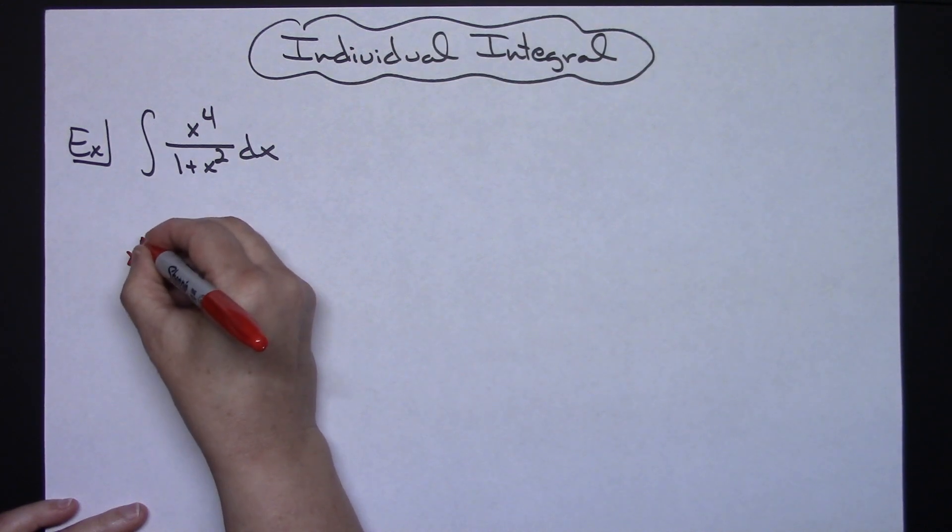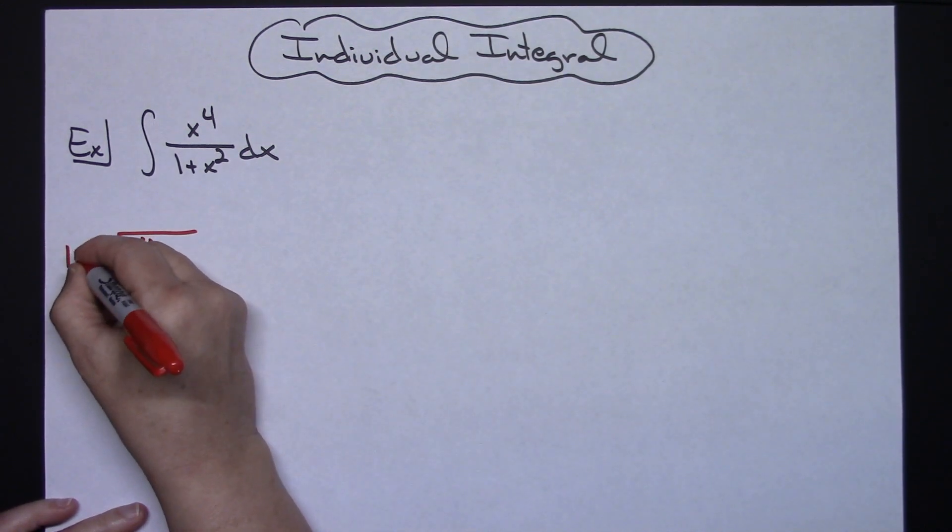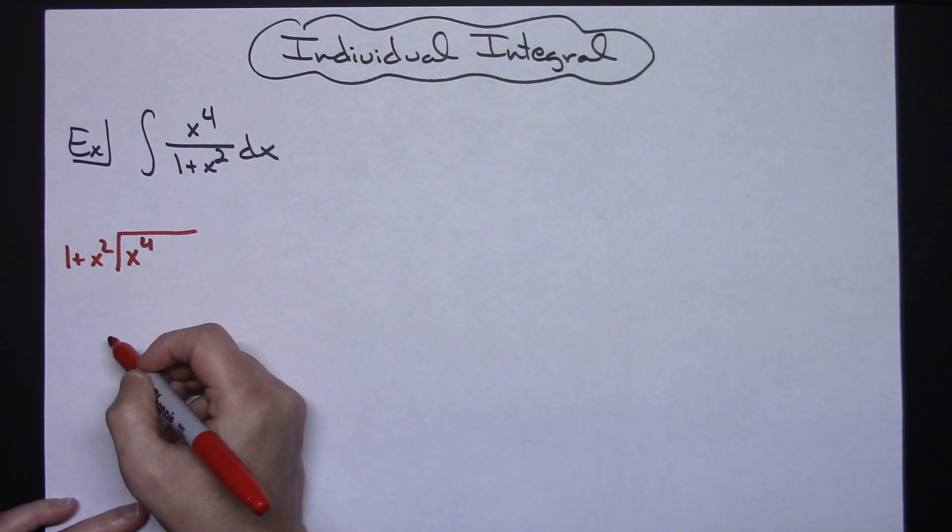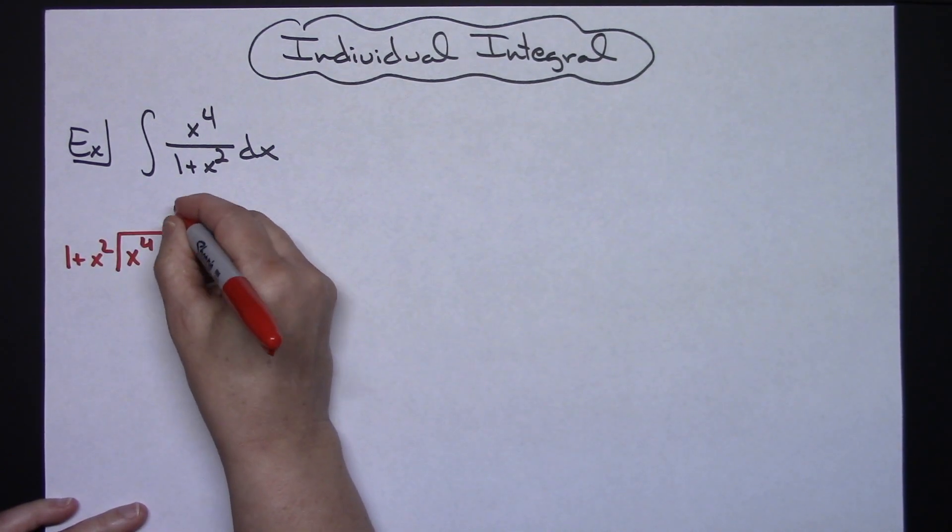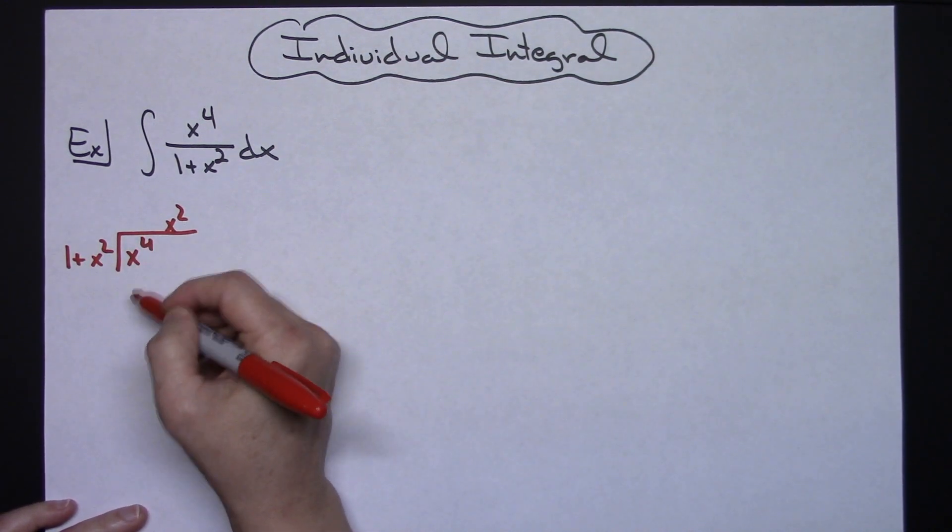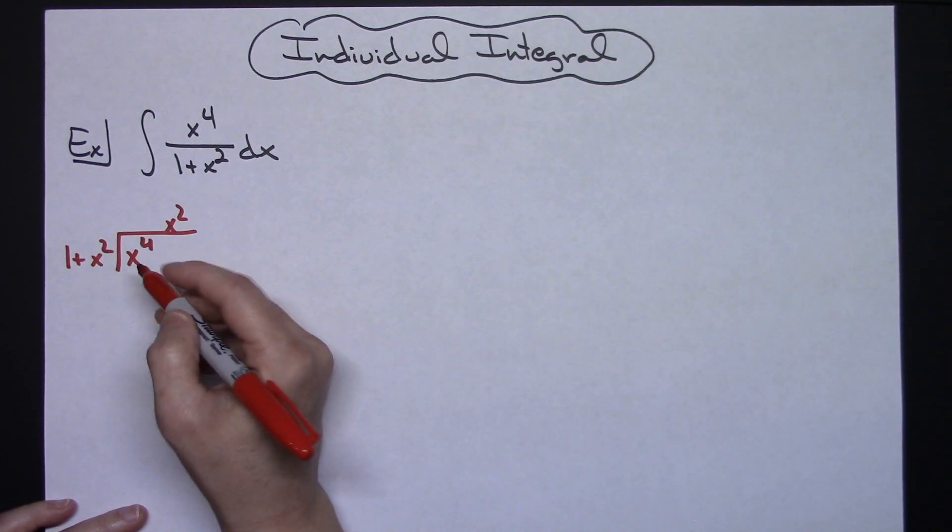So we're going to have x to the fourth on the inside and then we'll have that 1 plus x squared on the outside. x squared goes into x to the fourth x squared times. So then multiplying out here and putting this so that things line up nicely, x squared times x squared is going to give me x to the fourth.